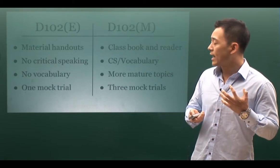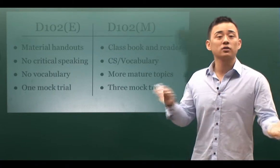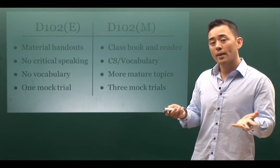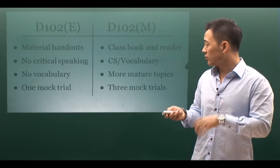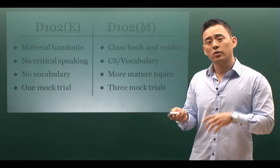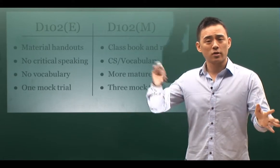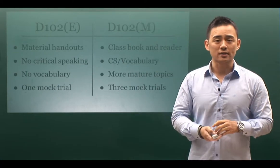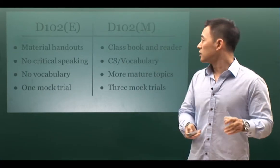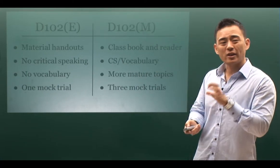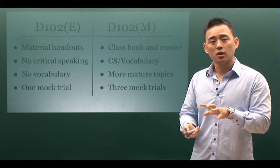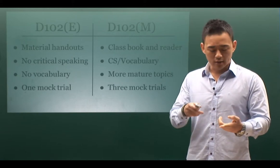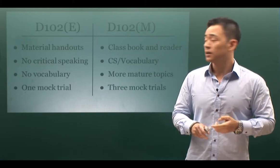Number three, no vocabulary. And they're going to do one mock trial as opposed to three in the middle school class. The difference in the middle school class is they're going to have a class book along with a reader that addresses different logical fallacies.